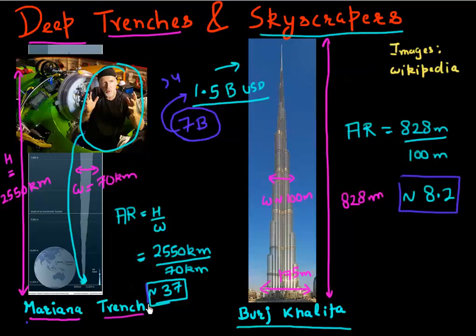But the point I want to bring home is the tallest building in the world has an aspect ratio of 8.2, the deepest trench has an aspect ratio of 37. I want to put these numbers in perspective because increasingly we're seeing similar deep trenches and skyscrapers in semiconductor technology.